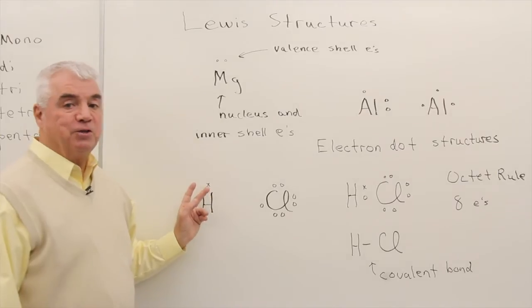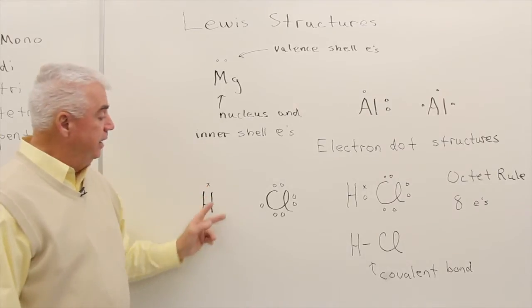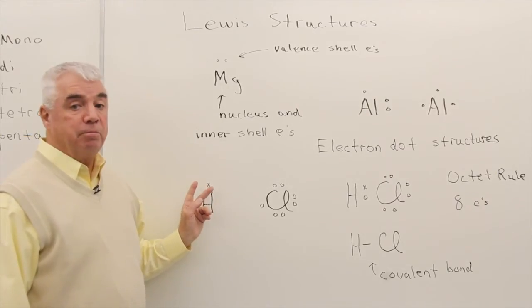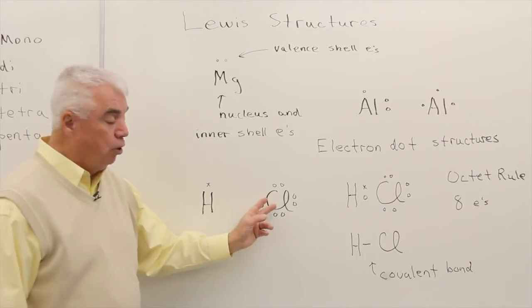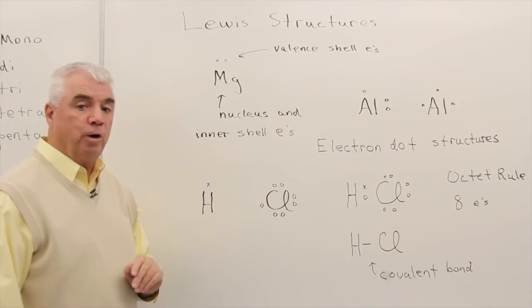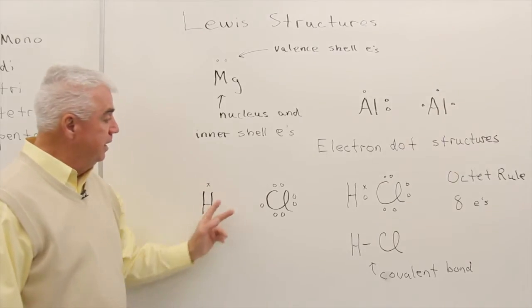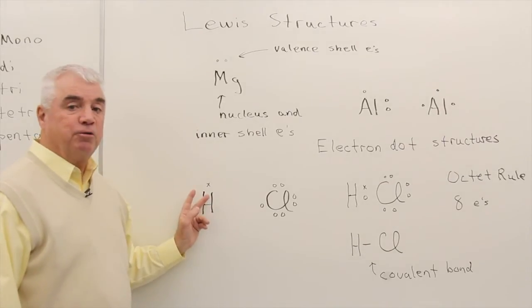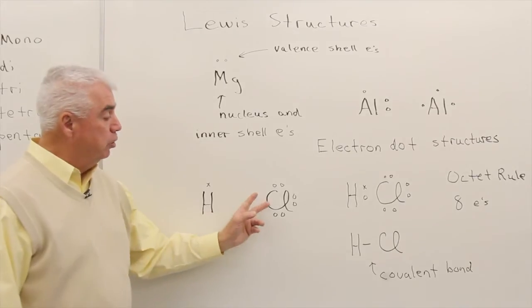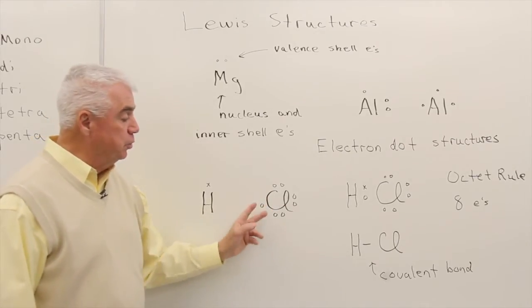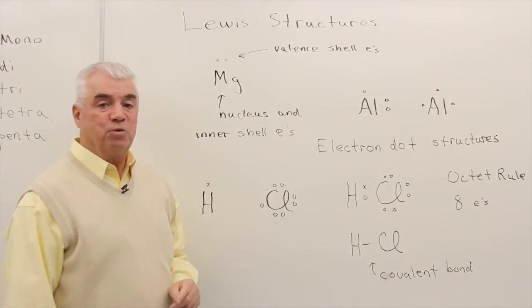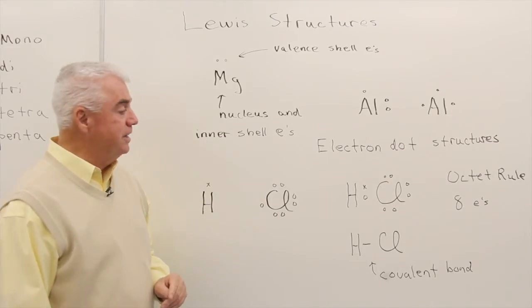Well, for hydrogen, because it's in the first period, its magic number is not 8, but 2. And hydrogen says, hey, chlorine, if you would just share one of your electrons with me, then it looks like I could have two electrons. And chlorine is anxious to work out this sharing too, because with 7, it only needs one more to have an octet.